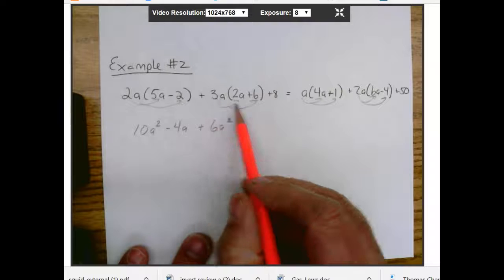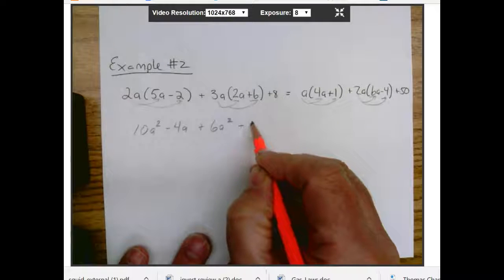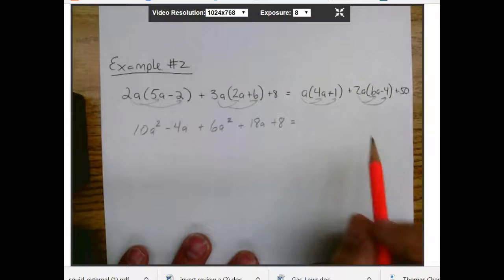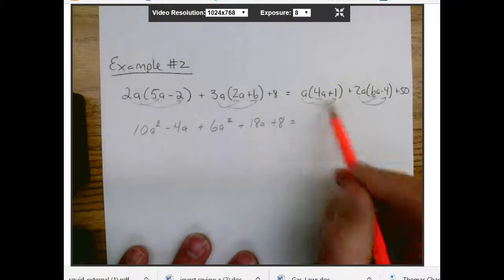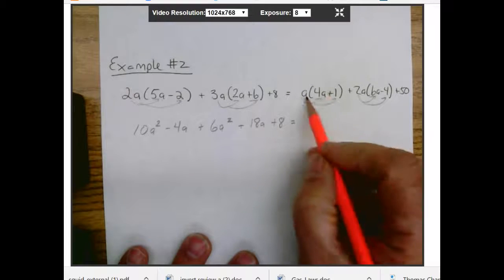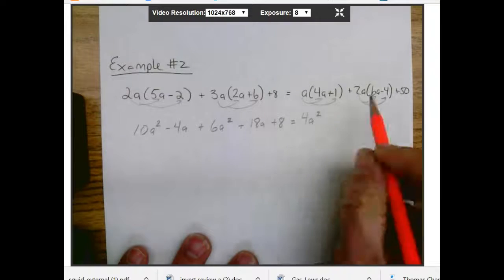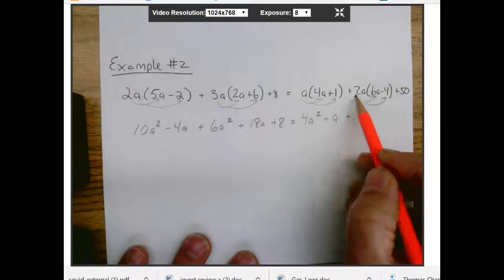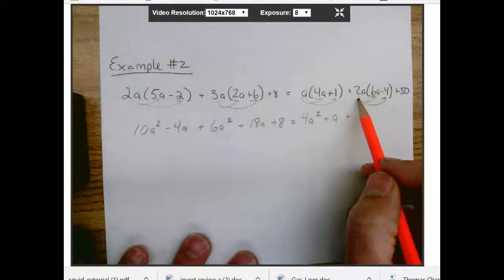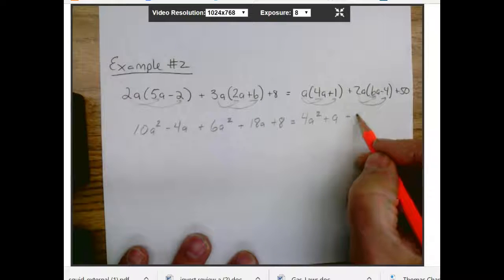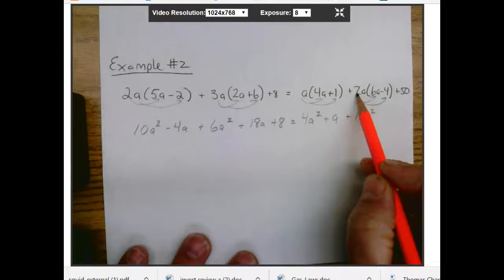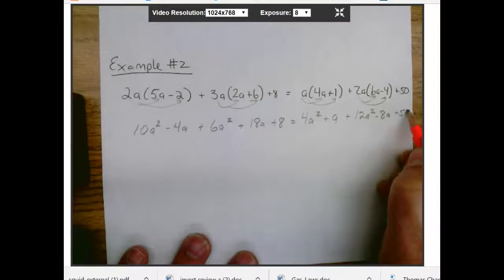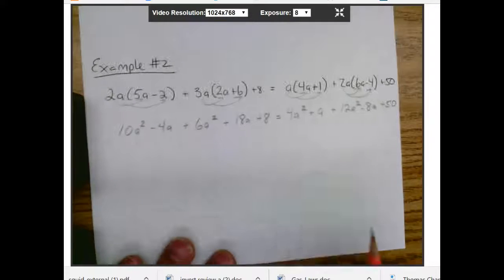3a times 2a is going to give us 6a squared. Do it again. 3a times 6 is going to be 18a. And then we're going to add 8. And that equals a times 4 times a. So it's going to be 4a squared. And then a times 1 is just going to give us a. And then here we have 2a times 6a. That's going to give us 12a squared. And then we have this one. 2a times negative 4. Negative 8a. And then plus 50.